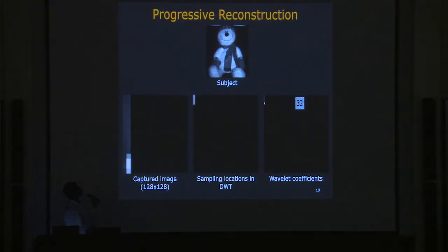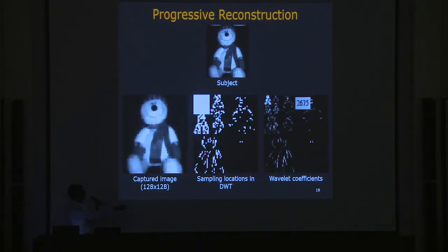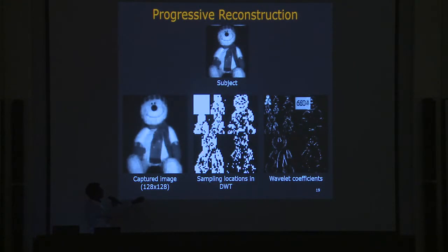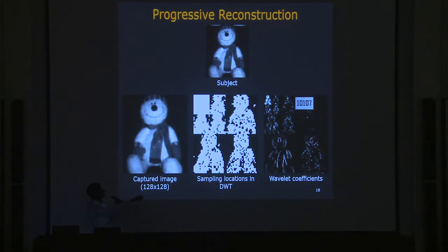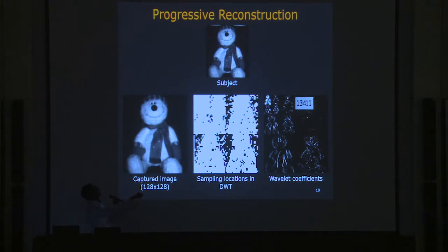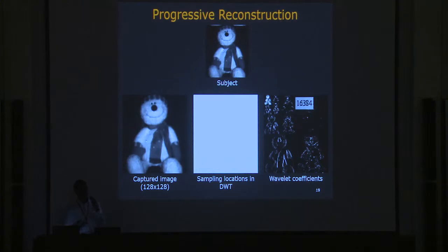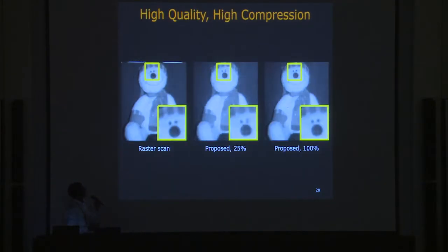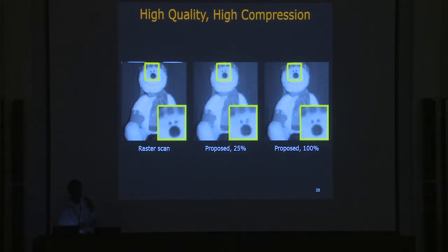Here are examples of what we can achieve with this imager. The subject is a snowman with distinct edges. Adaptive sensing starts by measuring coarse wavelet coefficients, then measures around edges first, then moves to the interior and exterior. Because we rely on the wavelet transform being sparse, by the time we've measured a quarter of the measurements, reconstruction quality is quite good. On the left is the raster scan image acting as ground truth. At a very high compression rate, you can achieve a very good quality image.